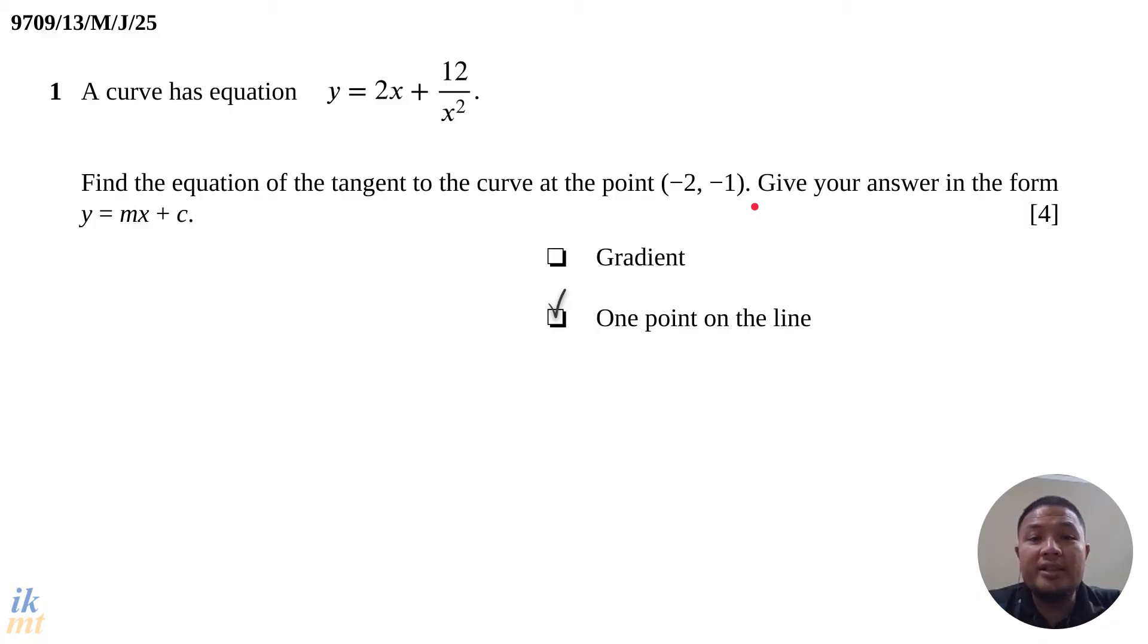So this gives us focus. We already know now what we need to do, and that is we need to go ahead and find the gradient of this line. Now the thing about tangent to a curve is that at the point of tangency, the gradient of the tangent to the curve and the gradient of the curve itself will be equal.